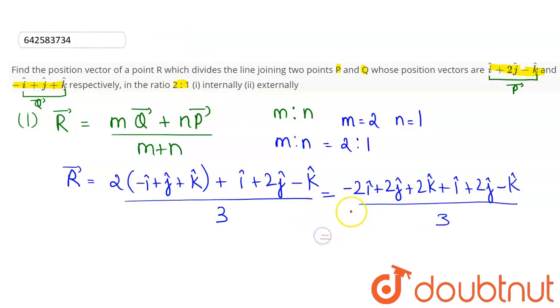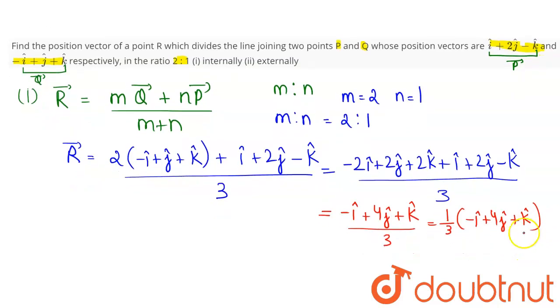So this can be written as 1 by 3 into minus I cap plus 4J cap plus K cap. So this is our required position vector that divides the line segment internally.